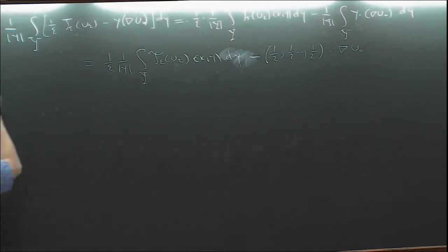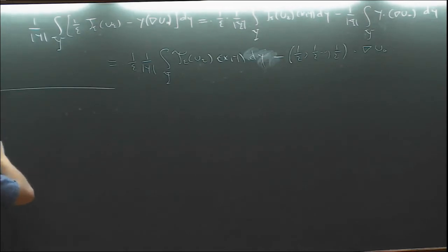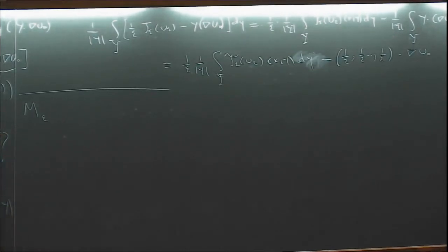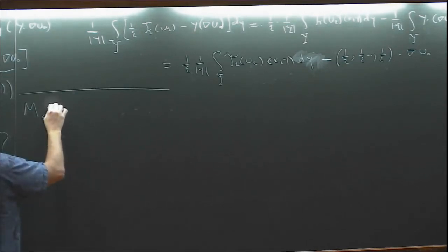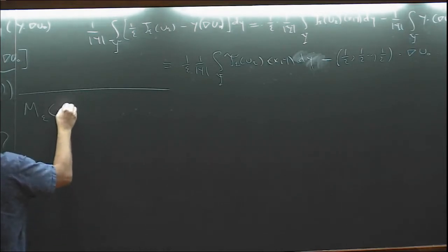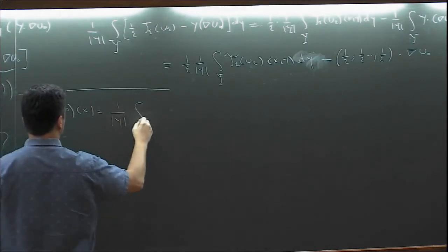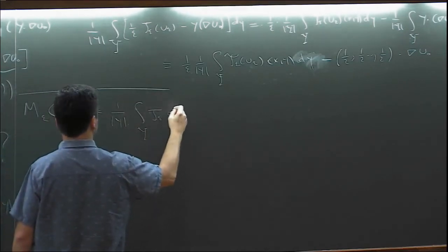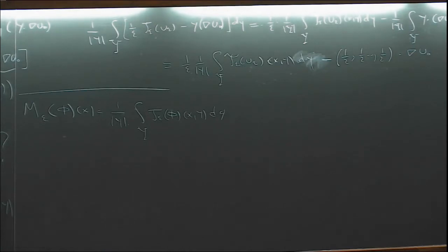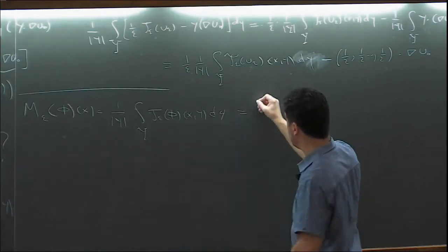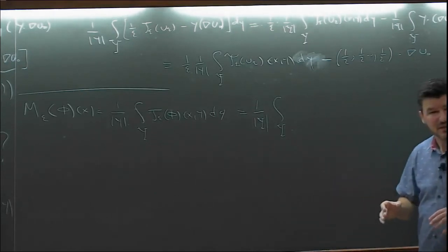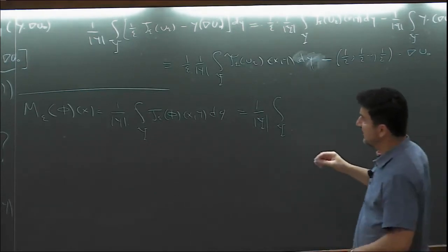The average of T_ε u_ε with respect to y is the so-called local average operator, denoted m_ε. This operator was introduced in the paper by Damlamyan, Cioranescu and Griso. It has many useful properties, especially for numerical error estimates. For our purposes, two simple properties are relevant.